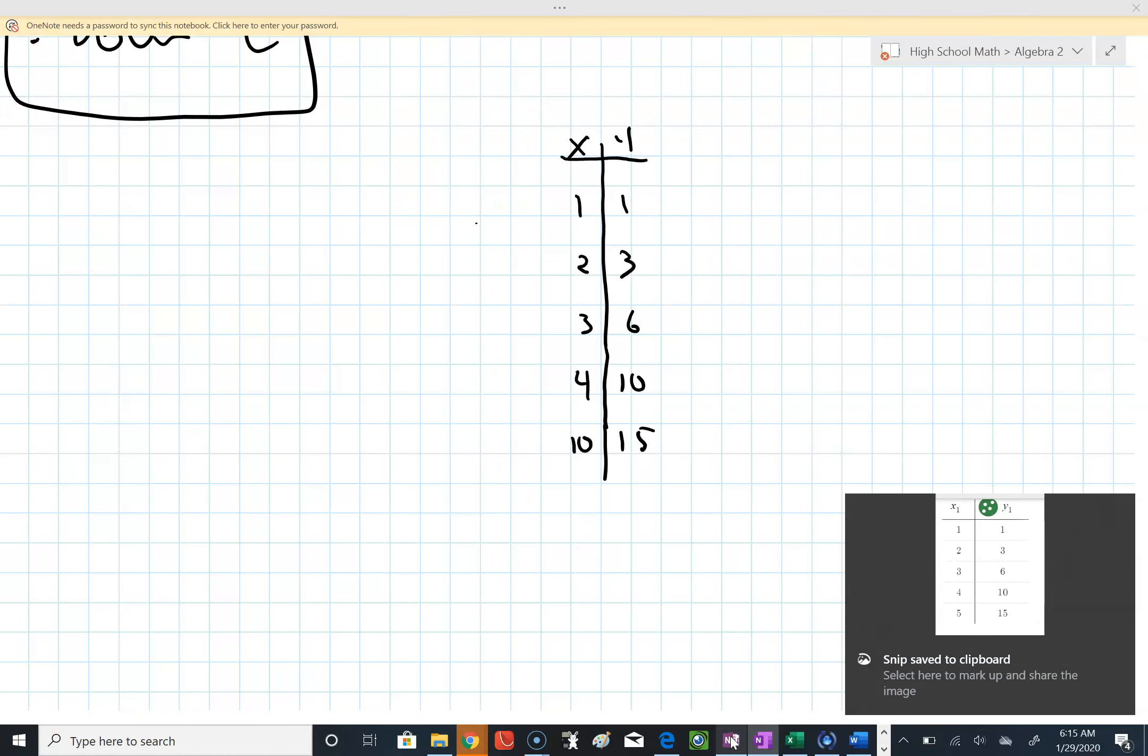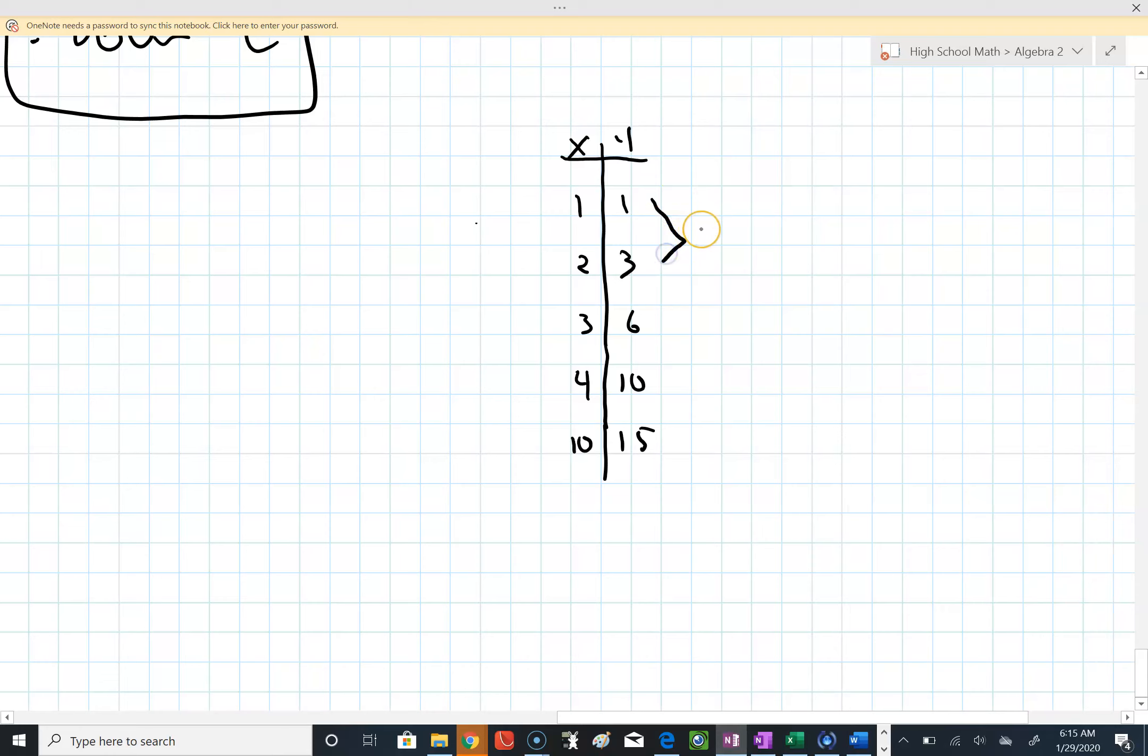The math teacher in me gets a spanking. So, from 1 to 3, it changes 2. From 3 to 6, it changes 3. From 6 to 10, it changes 4. From 10 to 15, it changes 5. Looking at these second differences, 1, 1, 1. This is indicative of a quadratic relationship, not an exponential relationship.